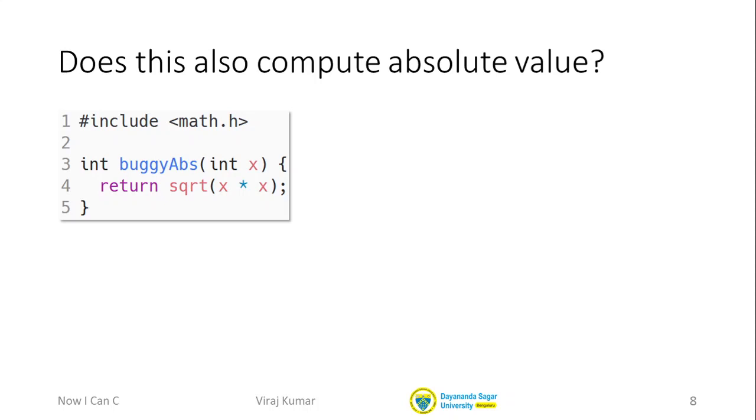We have included, there is this symbol hash include and then in angled brackets which is basically the less than and greater than symbols on your keyboard. We have included a file called math.h and anytime you see this kind of a statement, hash include some file name in these angled brackets, it means that this is one of the files that comes predefined with C.